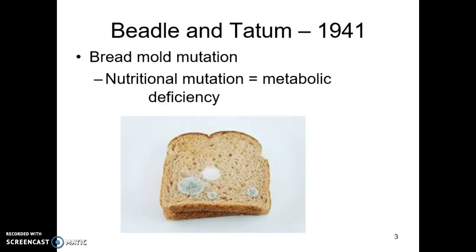In 1941, Beadle and Tatum ran experiments where they looked at bread mold mutations — the stuff that causes our loaf of bread to go bad. The mold mutated and changed, and they started to identify that this nutritional mutation was linked to metabolic deficiencies in the mold. If the mold did not have the ideal environment or the ideal bread to draw nutrients from, it had a mutation in how it would process those nutrients, which would lead to metabolic deficiency and create problems for the mold. They were trying to put the puzzle together connecting metabolic deficiency, nutritional mutation, and genes not functioning correctly.